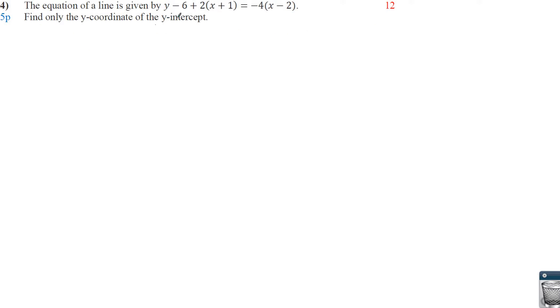The equation of a line is given by this. So find the y-coordinate of the y-intercept. So the y-intercept is when we solve for y and x is 0. So we have y minus 6 plus 2, 0 plus 1 equals negative 4, 0 minus 2. So minus 6 plus 2 equals 8, right? And then you can see now we get y minus 4 equals 8, y equals 12.